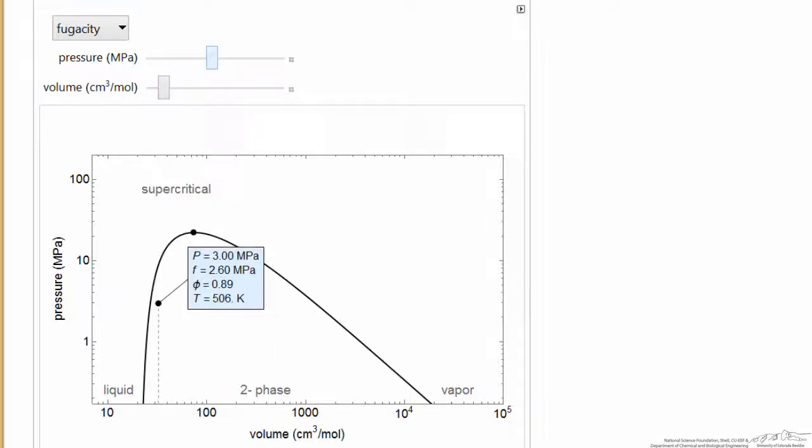If I increase the pressure, now the fugacity coefficient and fugacity are different. If the fugacity is lower than the pressure, we're at higher temperature. Still in the two-phase region, we don't change the fugacity.